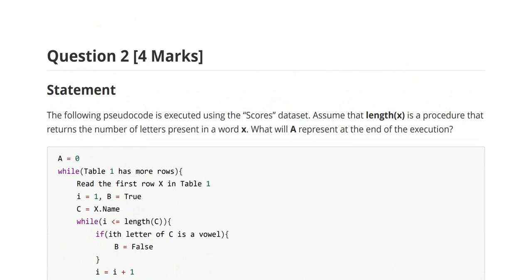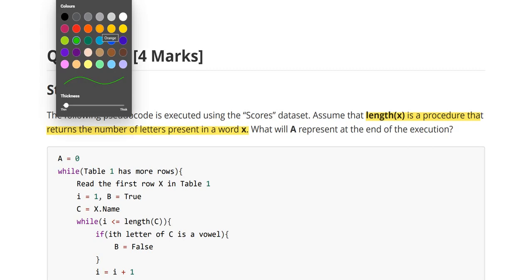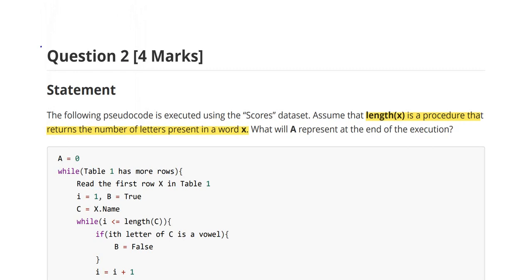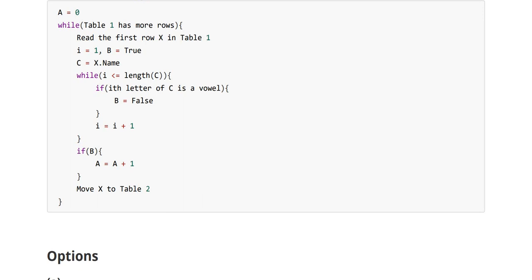Question 2: the following pseudocode is executed using the scores dataset. Assume that length(x) is a procedure that returns the number of letters present in a word x — essentially a letter count. What will 'a' represent at the end of execution? Let us go through the pseudocode. Initially, 'a' is set to zero.